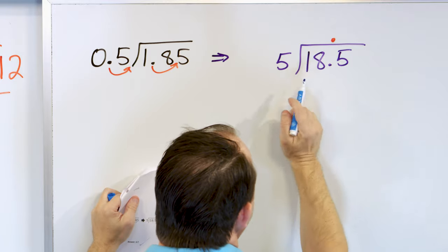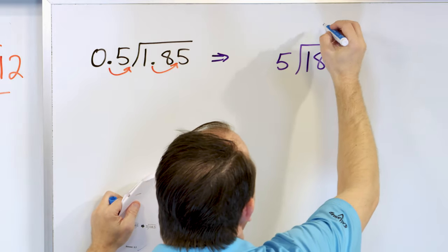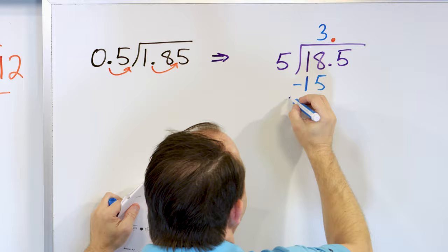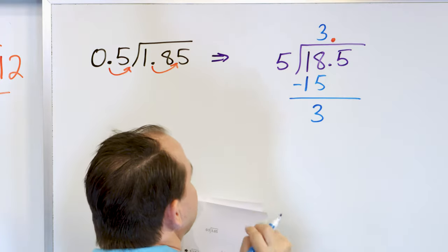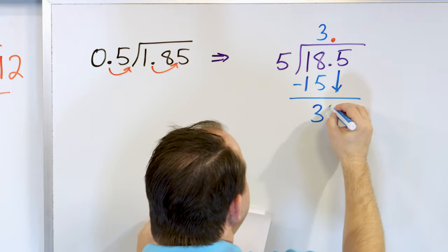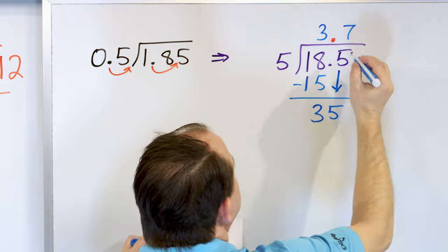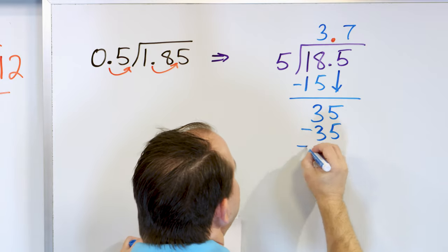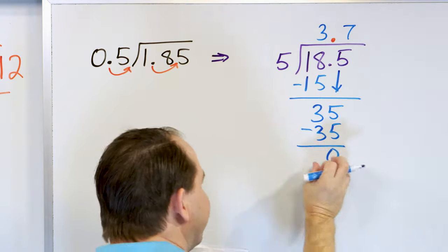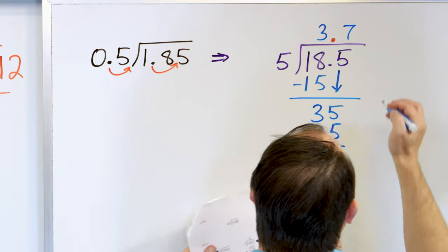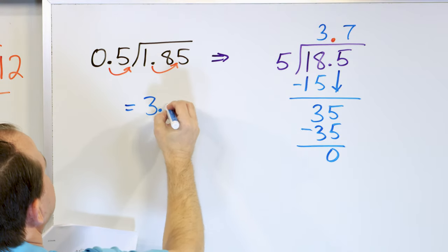5 divided into 1 doesn't work. 5 going into 18: 5 times 3 is 15, 5 times 4 is 20 — that's too big, so it has to be 5 times 3 = 15. What is 18 minus 15? That's 3. After we subtract, grab the next digit — we have 35. Now 5 times what is 35? 5 times 7 is 35. Multiply, subtract and get a 0. Grab the next digit — there is no next digit, so we're done. The remainder is 0, and the answer we get is 3.7.